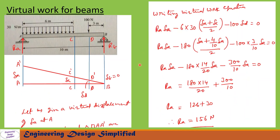Now let us write the virtual work equation: RA × delta_A − 6 × 30 × (delta_A + delta_C) / 2 − 100 × delta_D = 0. Here 6 is the span, 30 N/m is the UDL, so total load is 30 × 6, and the average displacement between A and C is (delta_A + delta_C) / 2.